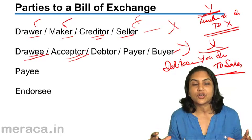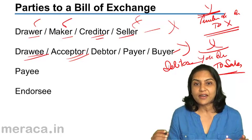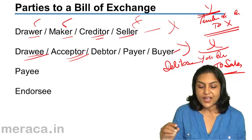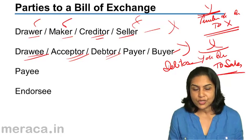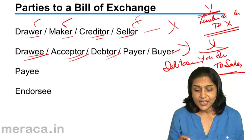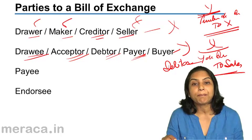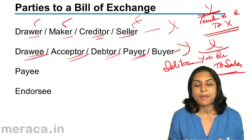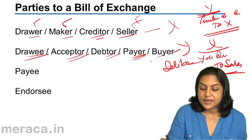He signs and accepts, agrees to make the payment on the particular day — he is the acceptor. He is the debtor, the person who is buying the goods. Y's account is the debtor in the books of X. The person who has to pay is called the payer. The person who receives the payment is called the payee. He is the payer and he is the buyer.